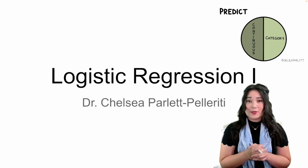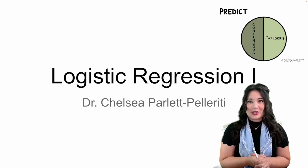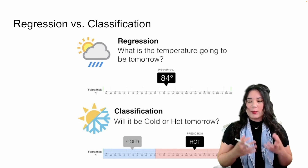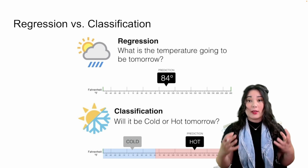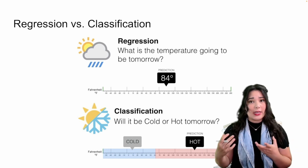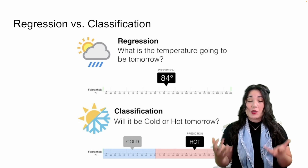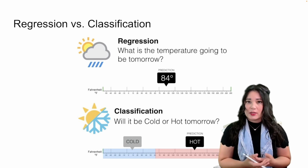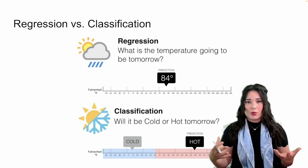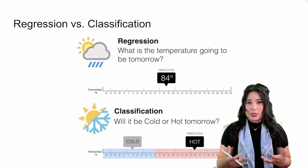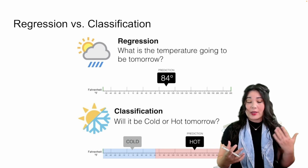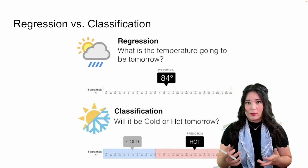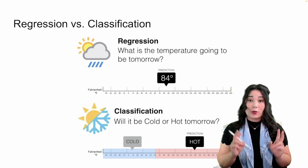Hello and welcome to your first logistic regression lecture. Before we talk about logistic regression, I want to talk about classification versus regression in general. When we're doing supervised machine learning and making predictions of values, there's basically two classes of things we might want to do. Like we did with linear regression, we might want to predict a continuous value — these are called regression problems.